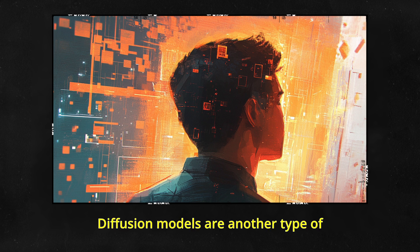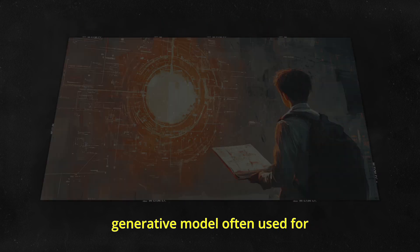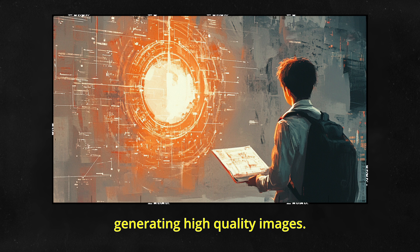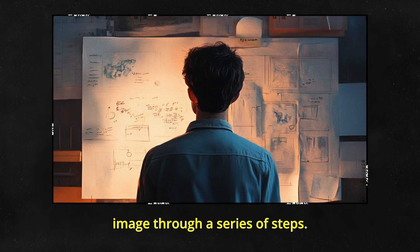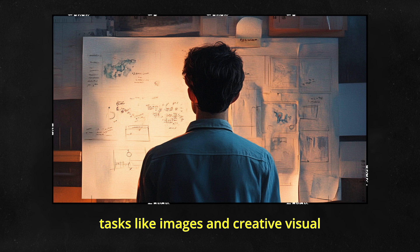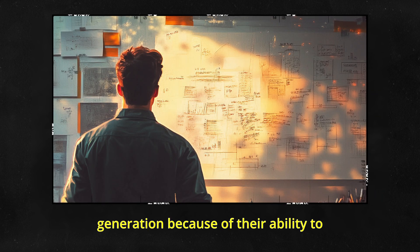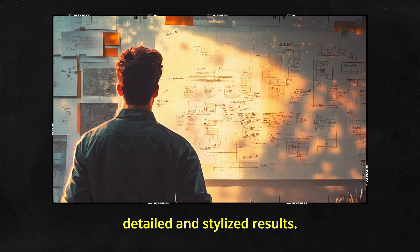Diffusion models are another type of generative model often used for generating high quality images. They work by starting with random noise and gradually refining it into a coherent image through a series of steps. These models have gained popularity for tasks like images and creative visual generation because of their ability to produce highly detailed and stylized results.